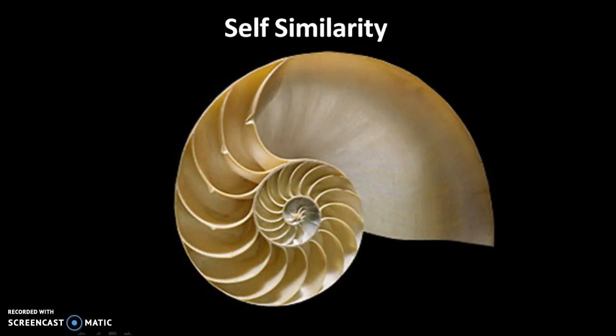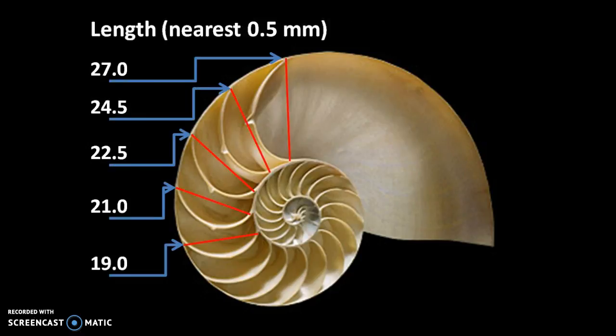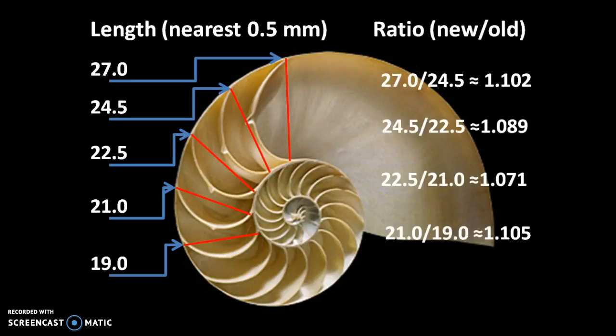The geometrically similar chambers fit the quality of self-similarity. For example, we can compare the length ratios of old chambers to new chambers. We can write a ratio of new chamber length to old chamber length. You can see that the chambers are proportional and grow with a consistent scale factor of approximately 1.1, meaning the shell is self-similar.